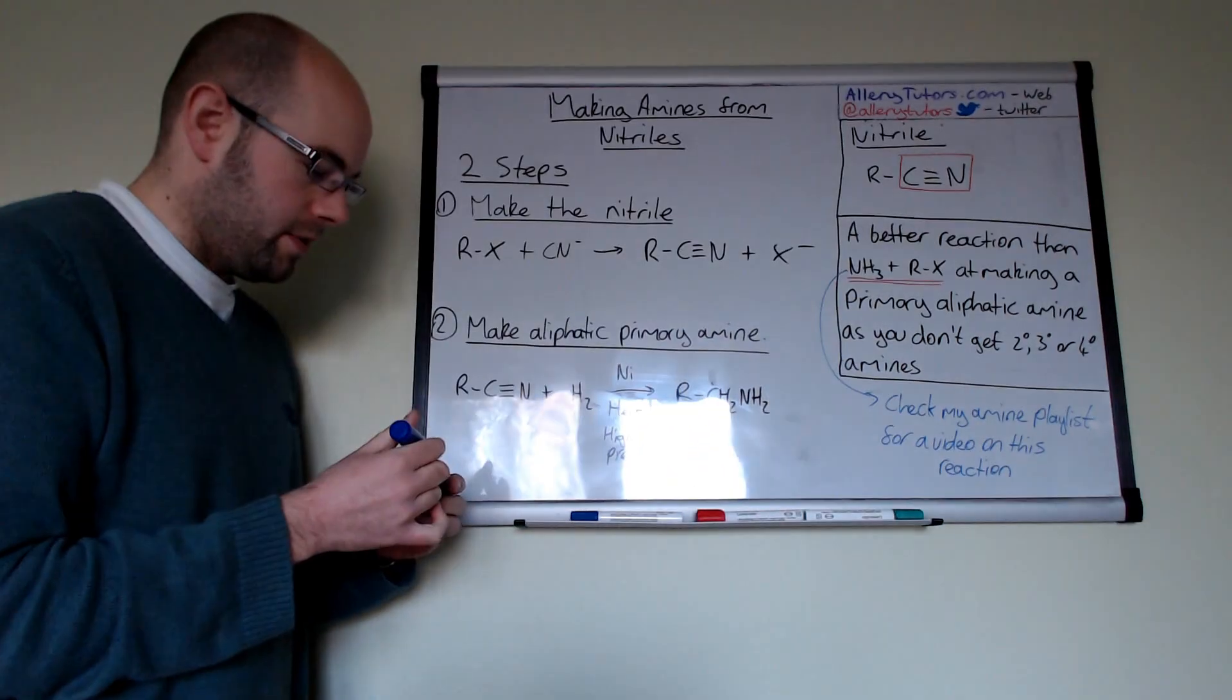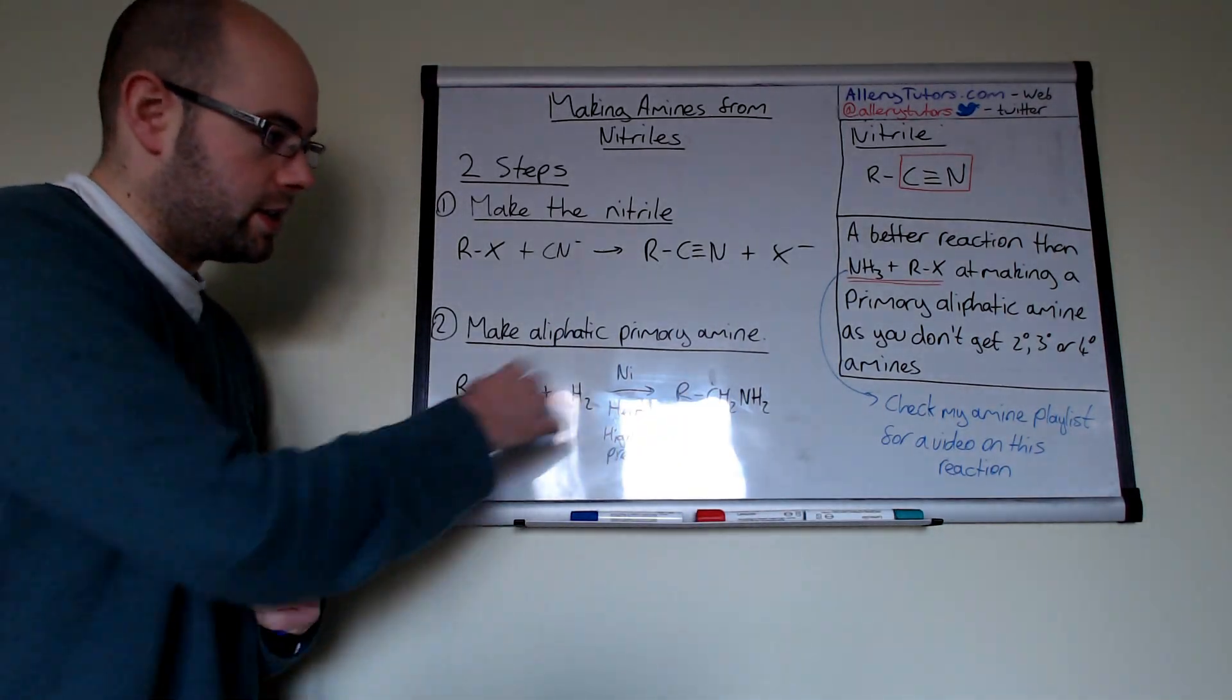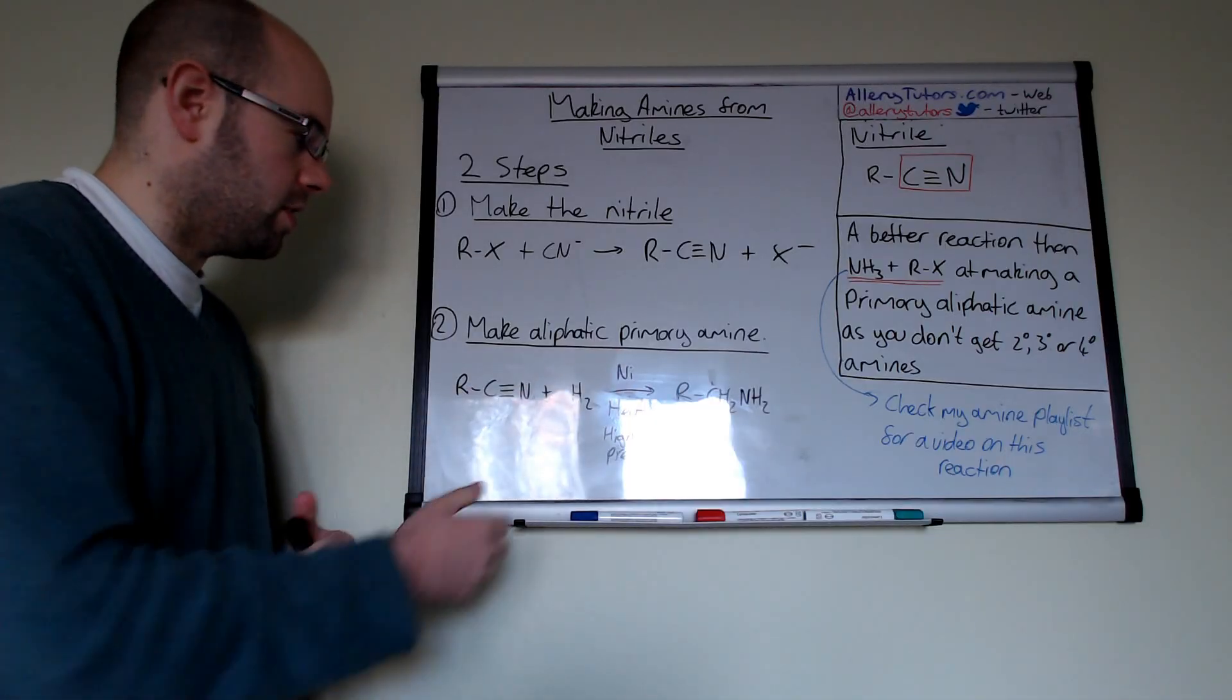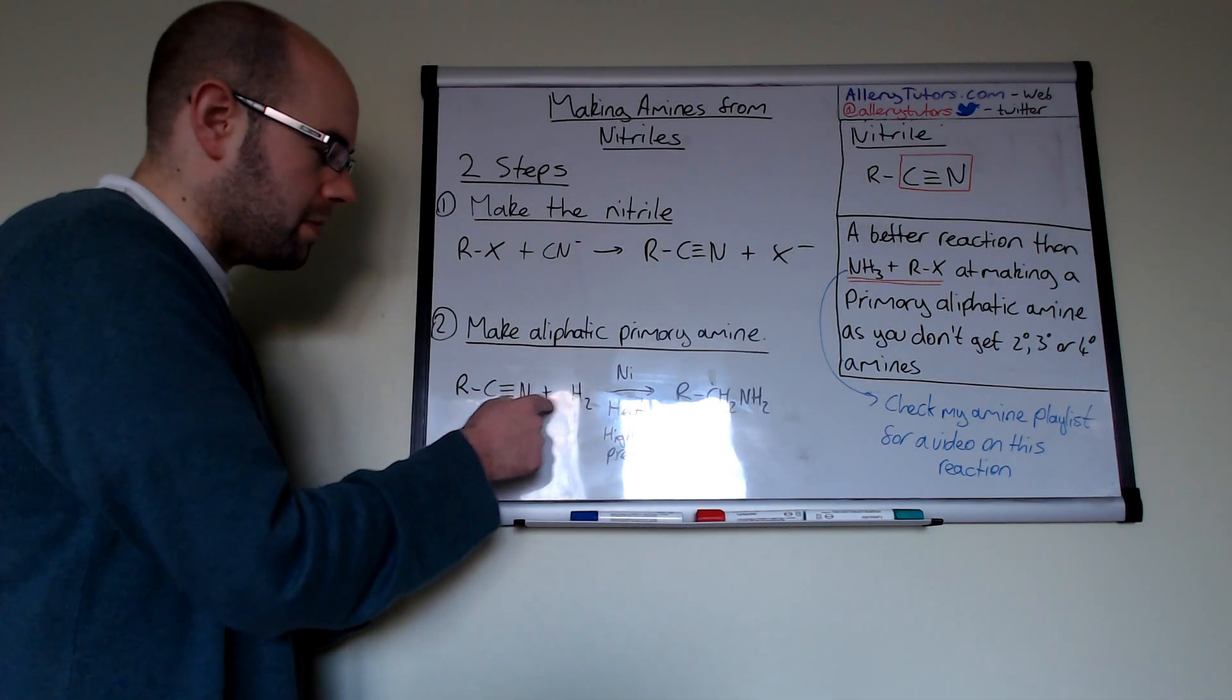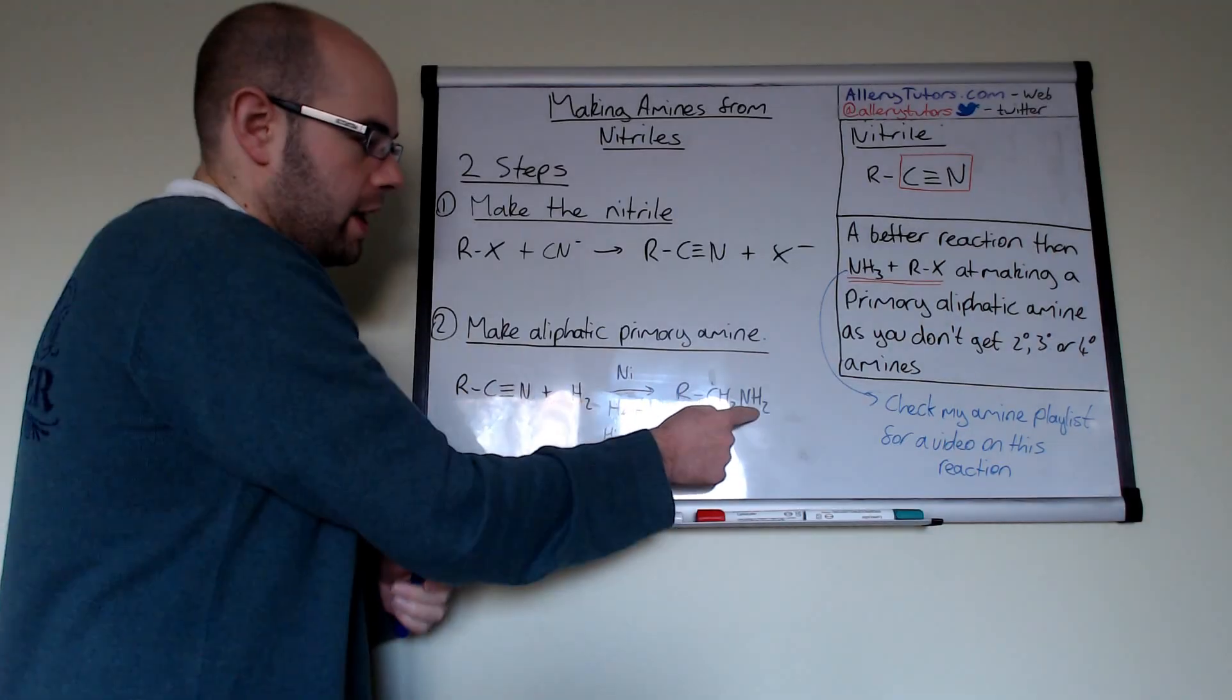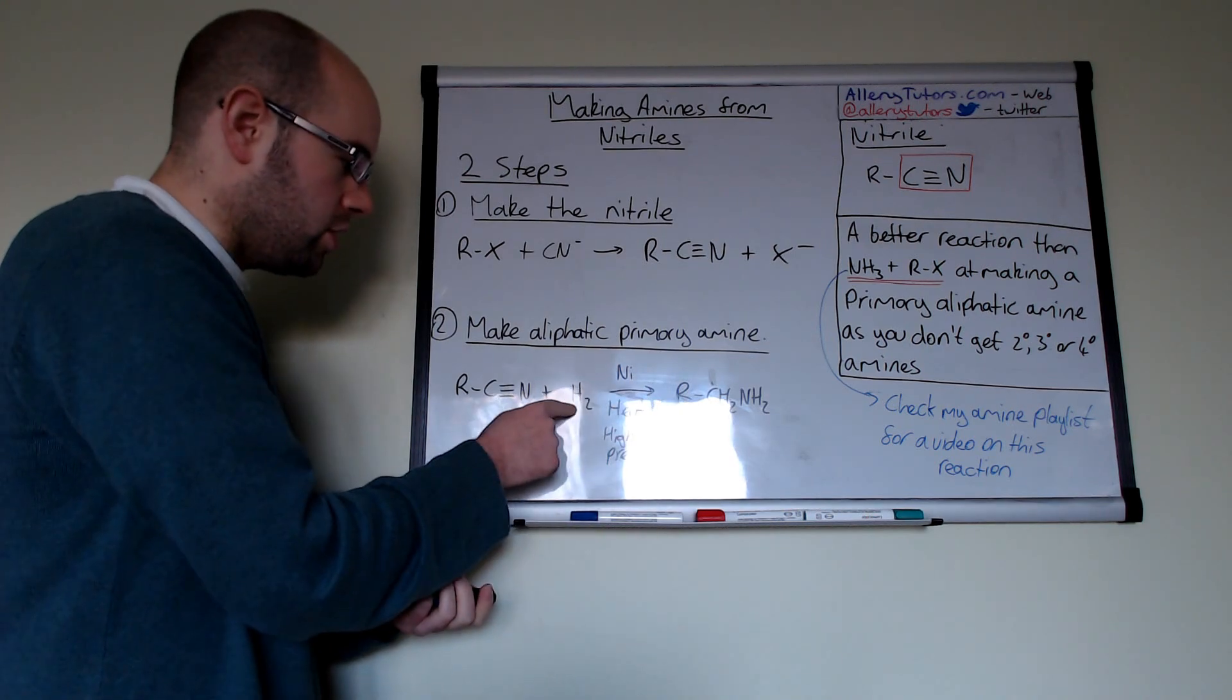Okay now you can see that we've formed our amine however you can see that this reaction is not quite balanced so we've got hydrogen gas here, now hydrogen gas, two of those hydrogens will obviously go on to form the nitrogen on there which is the obvious one but a lot of people forget that you need two hydrogens as well on this carbon